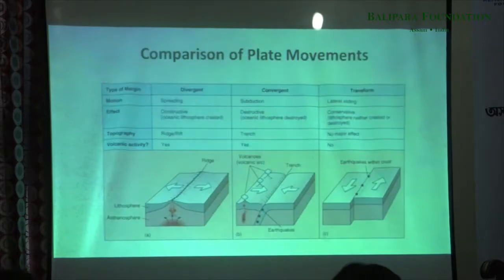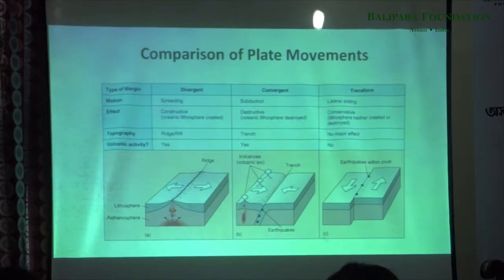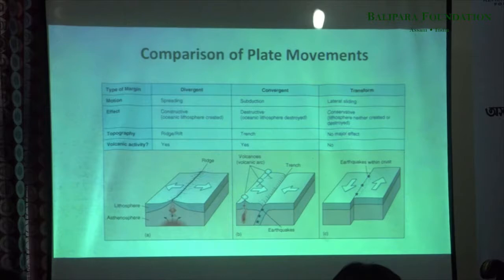There are three kinds of plate movements. One is where plates are moving away from each other, so new crust gets formed - that's constructive. The second is when plates move towards each other, so one moves below the other - that's destructive, and old plate gets consumed into the mantle. The third is when they are moving past each other - that's a kind of conservation, let's call it.